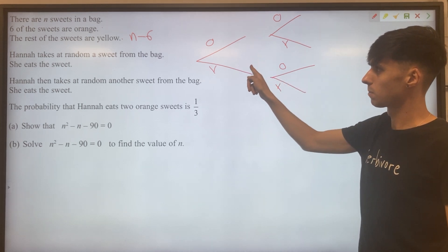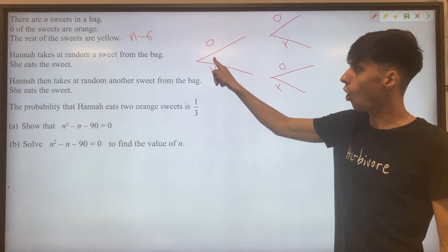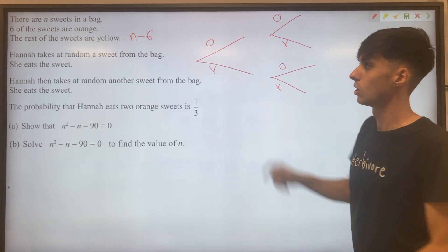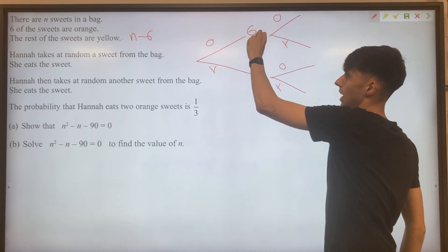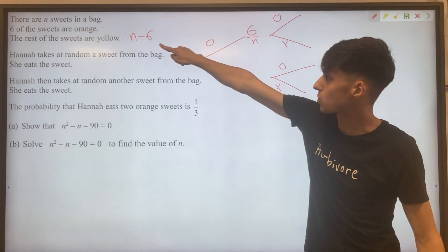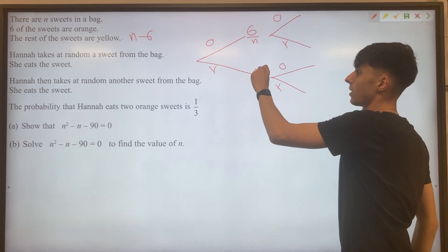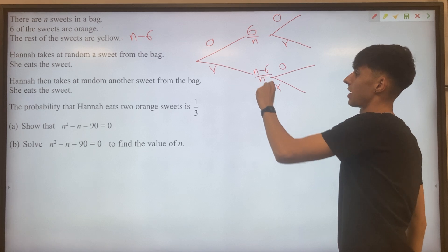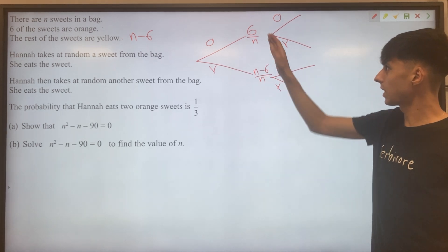Let's fill in the first branch then. So the chance you pick an orange sweet is six out of N total. That part's okay.